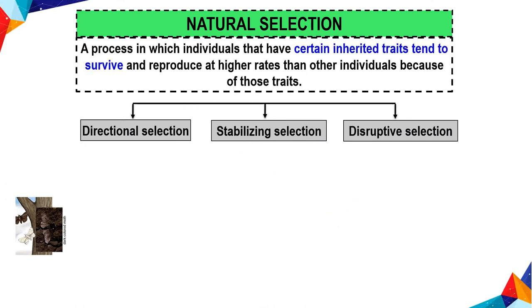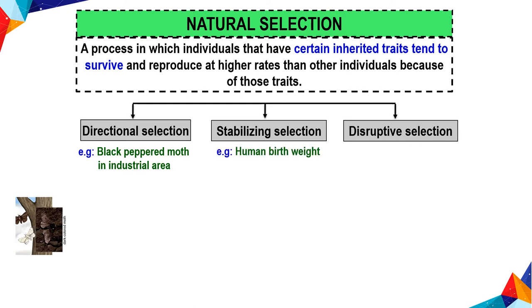Natural selection is a process in which individuals that have certain inherited traits tend to survive and reproduce at a higher rate than other individuals because of those traits. For example, directional selection: black peppered moths in industrial areas. Stabilizing selection: human birth weight. And disruptive selection: the size and shape of finches in the Galapagos.